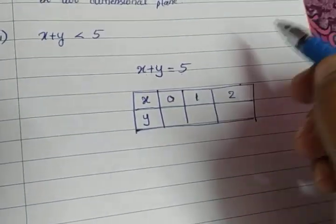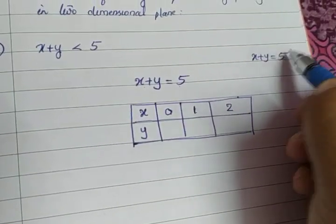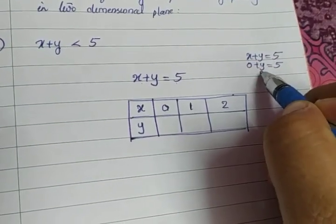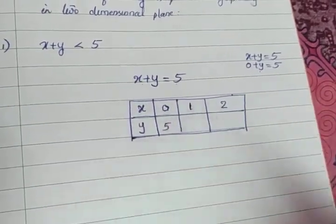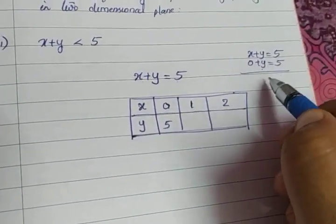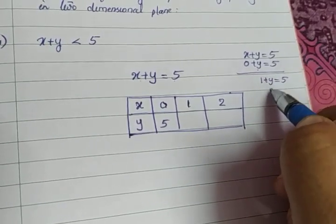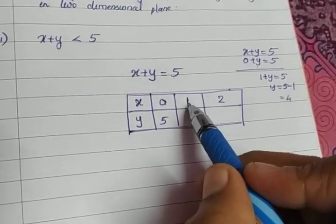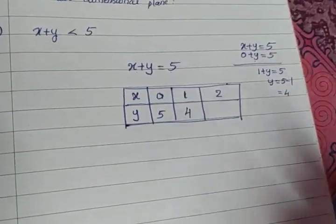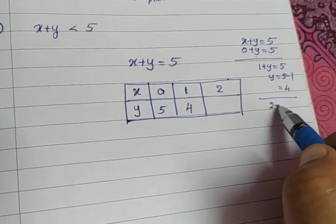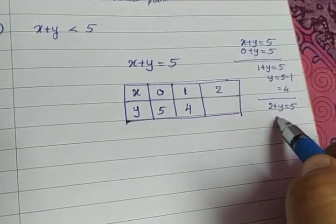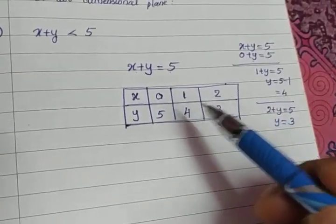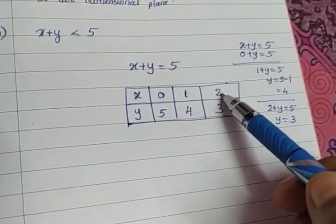When x takes the value 0, the equation gives 0 plus y equal to 5, so y is 5. When x takes the value 1, 1 plus y equal to 5 gives y equal to 4. When x takes the value 2, 2 plus y equal to 5 gives y equal to 3. So we are getting three points: (0, 5), (1, 4), and (2, 3).